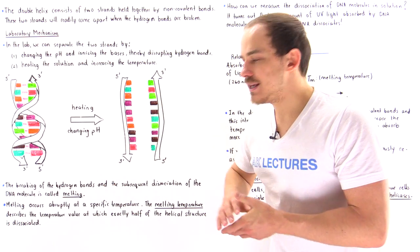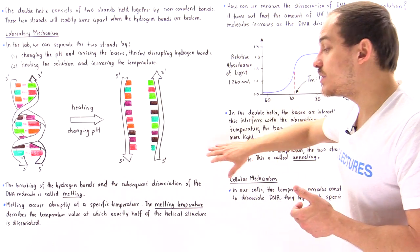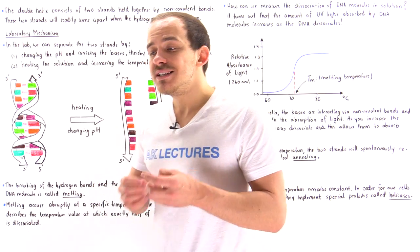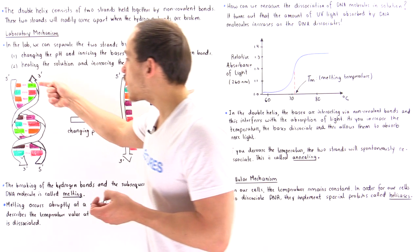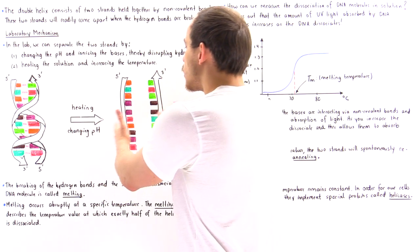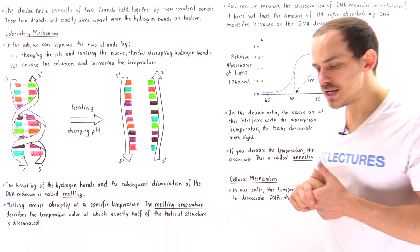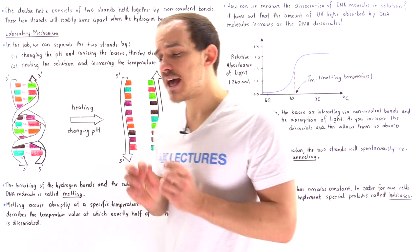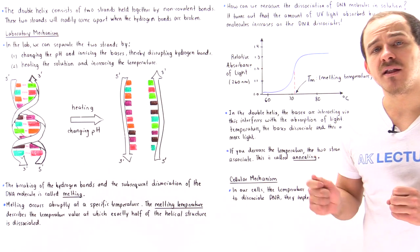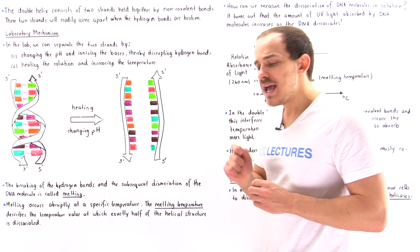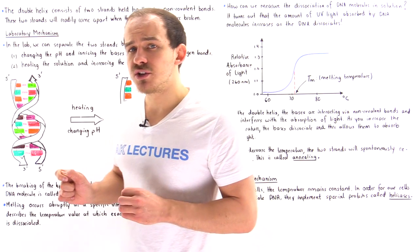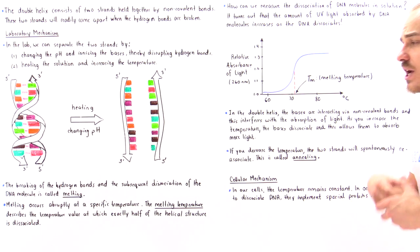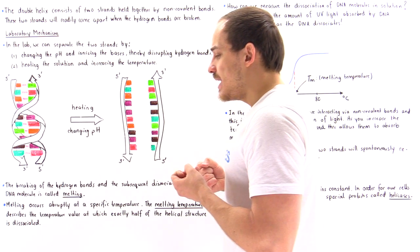The breaking of the hydrogen bonds and the subsequent dissociation of the DNA molecule is known as melting. DNA melting essentially refers to breaking these bonds and dissociating that DNA molecule. This process takes place abruptly at a very specific temperature, known as the melting temperature of the DNA — specifically, the temperature at which exactly half of that double helix structure has dissociated.